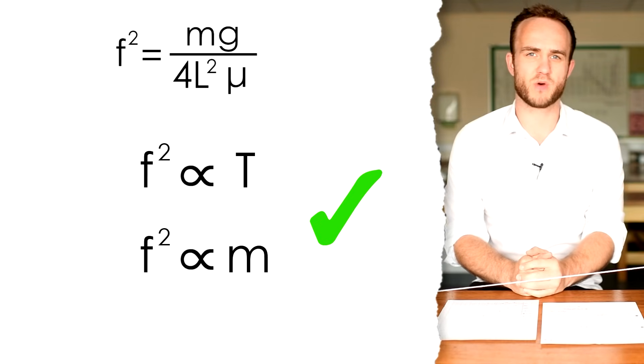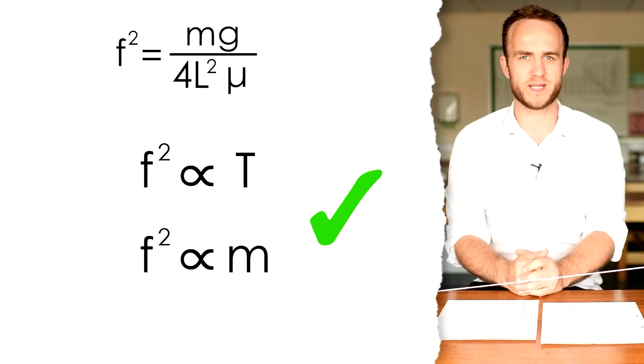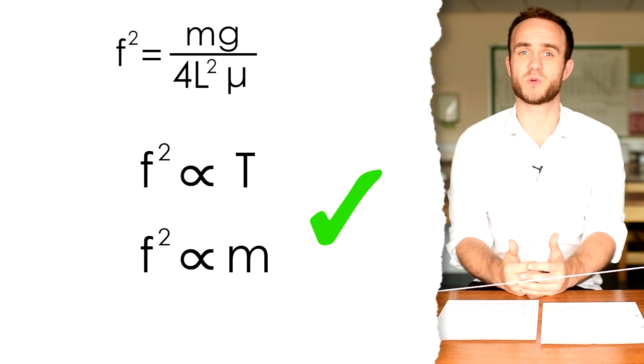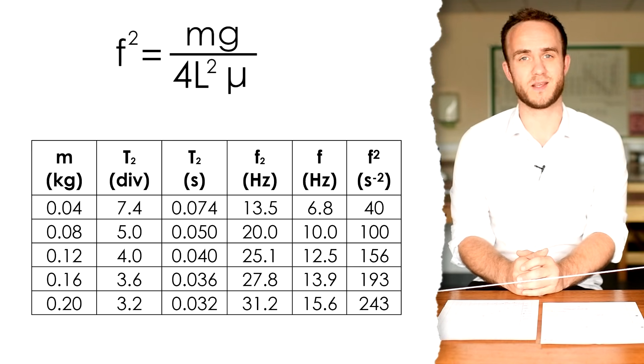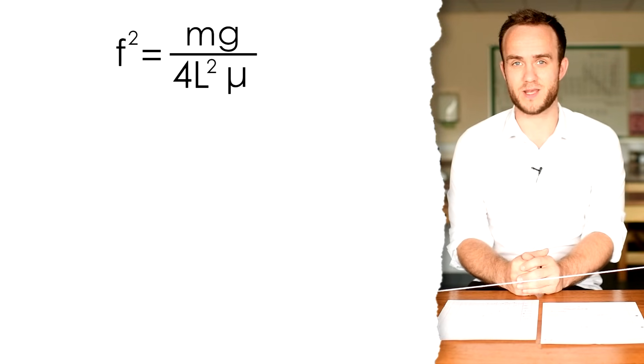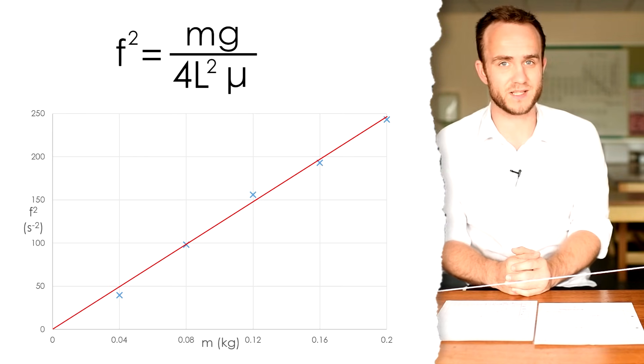Now, because L and mu and G are constants, we can say that the frequency squared is proportional to the mass. So, if we drew a graph of F against M, we wouldn't get a straight line. We don't have that proportional relationship. However, if we draw a graph of F squared against M, we do end up with a straight line like this. Now, we need to find the gradient of our line.